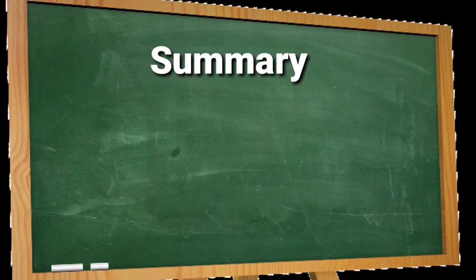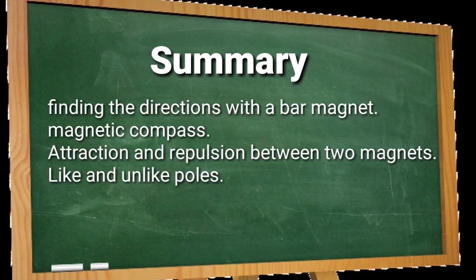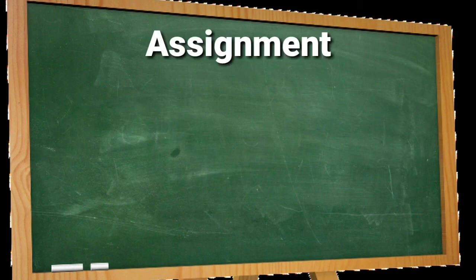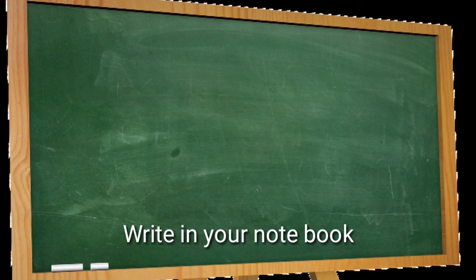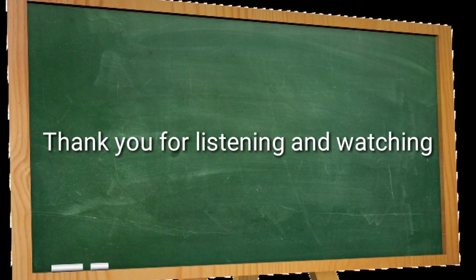The summary of this lecture: we have talked about finding directions with a bar magnet, what a magnetic compass is, attraction and repulsion between two magnets, and like and unlike poles. I hope you understood these points. Your assignment is to write up the lab activity on finding directions that was covered in this lecture. If you don't understand, watch it again — you will definitely understand. Write it in your notebook. Thank you for listening.